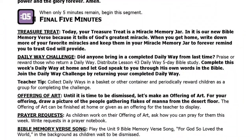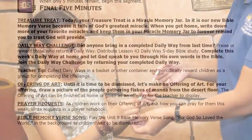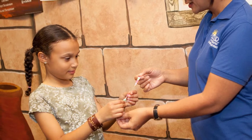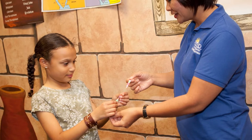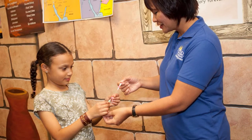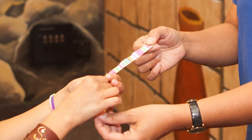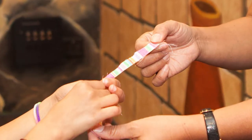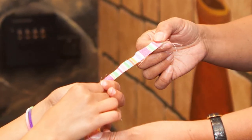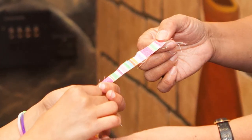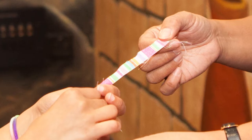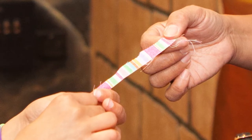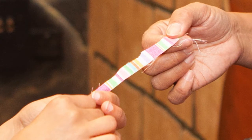When you have only five minutes left, it's time for the Final Five segment. During this closing segment, give the children their treasure treat — a small inexpensive item they take home to spark conversation with their families about today's Bible story. For example, the treasure treat for the story about Joseph and his jealous brothers is a very small scrap of fabric to represent the cloth from Joseph's coat of many colors. When family members see the treat and ask about it, the child then has a great opportunity to share what he or she learned that day — taking God's Word into the home.